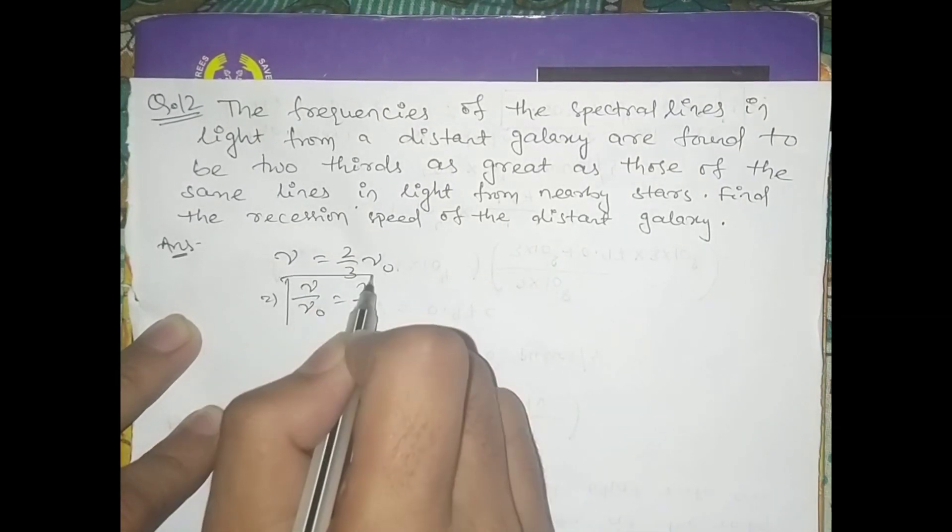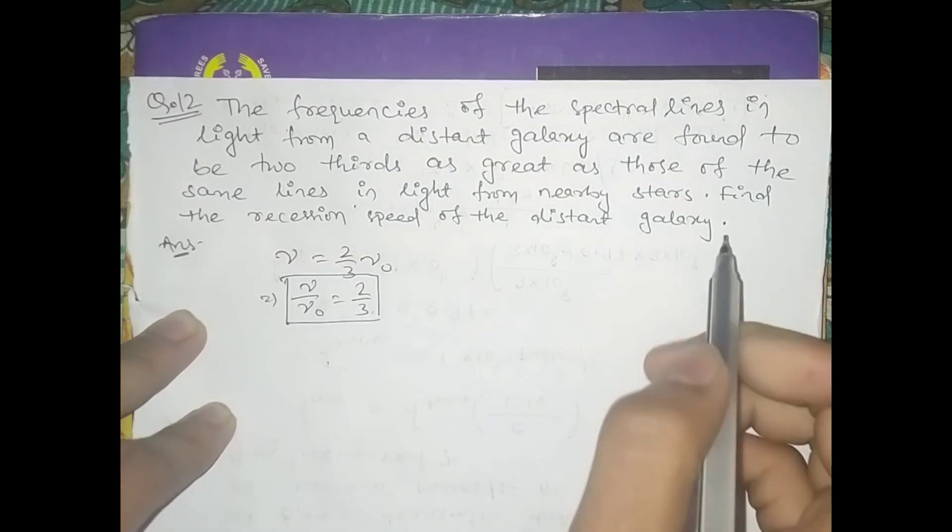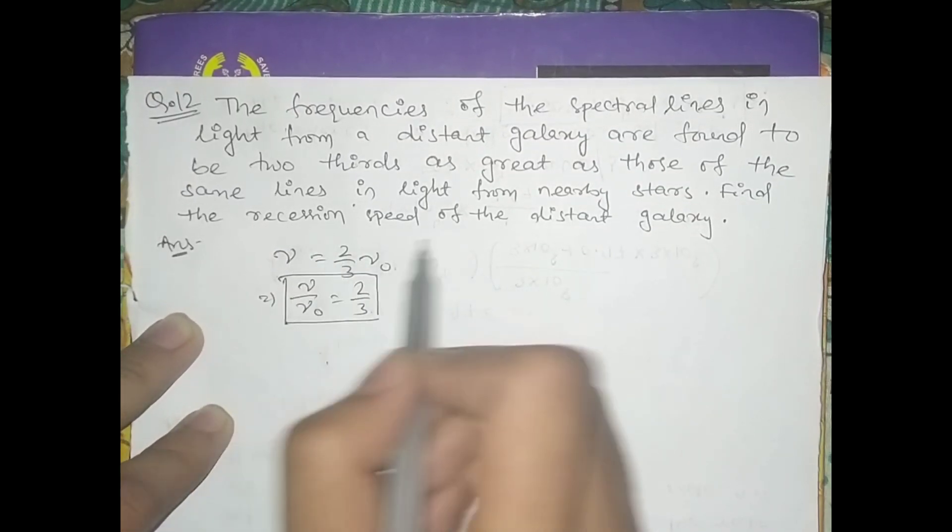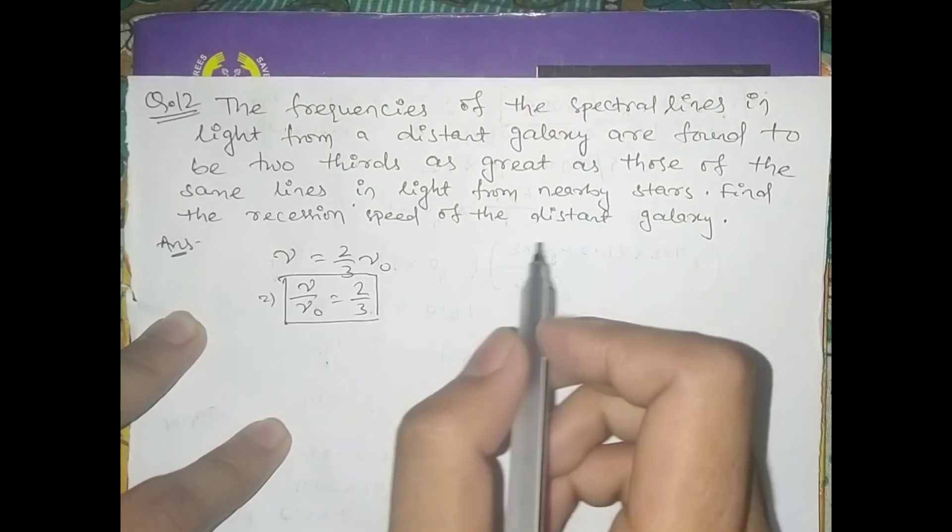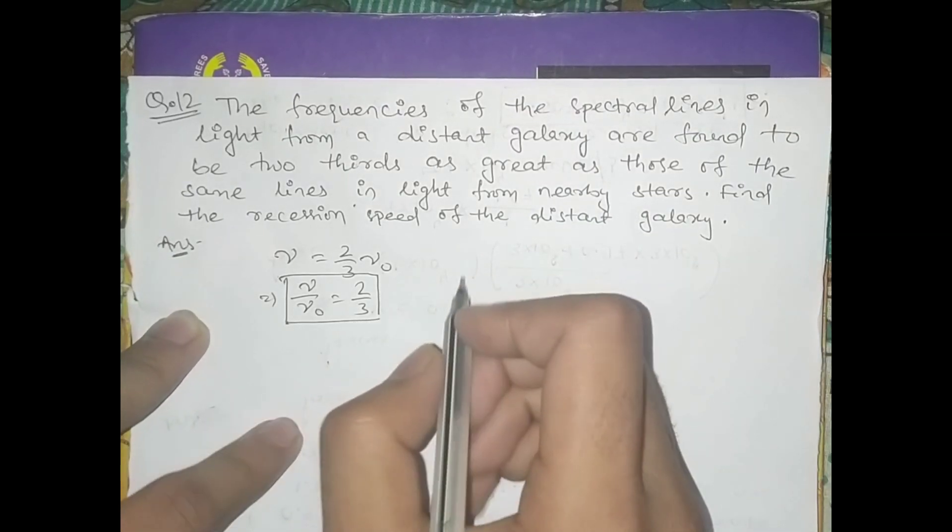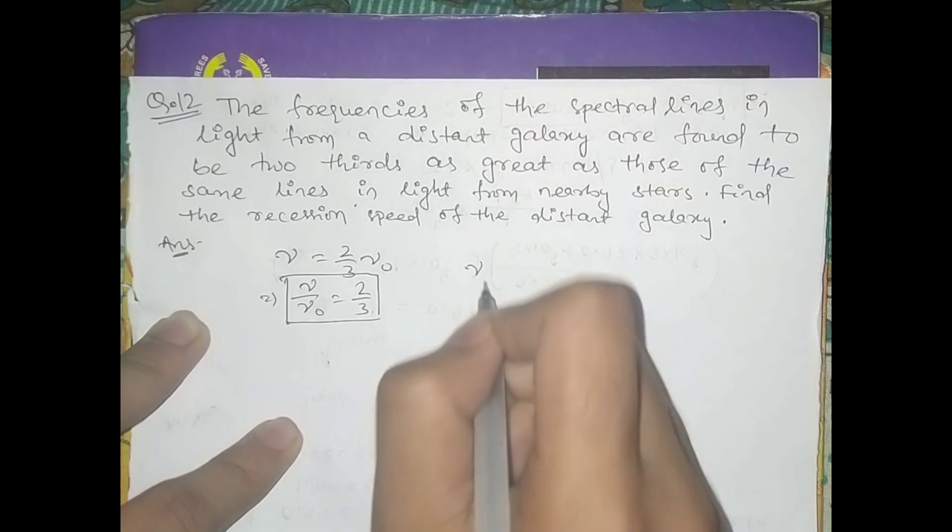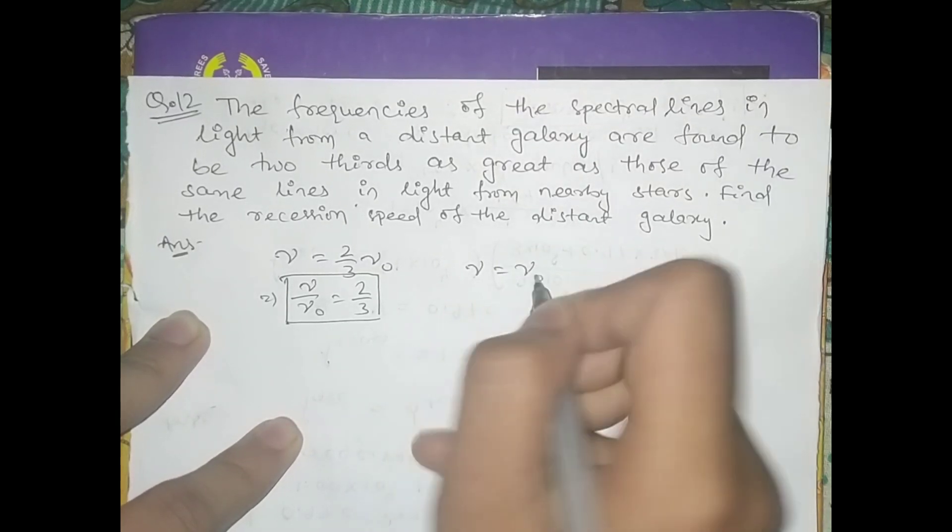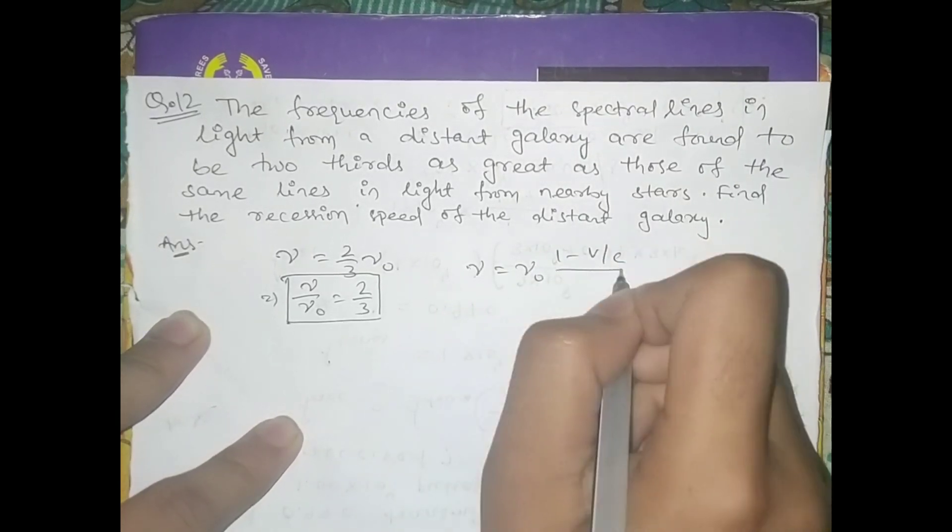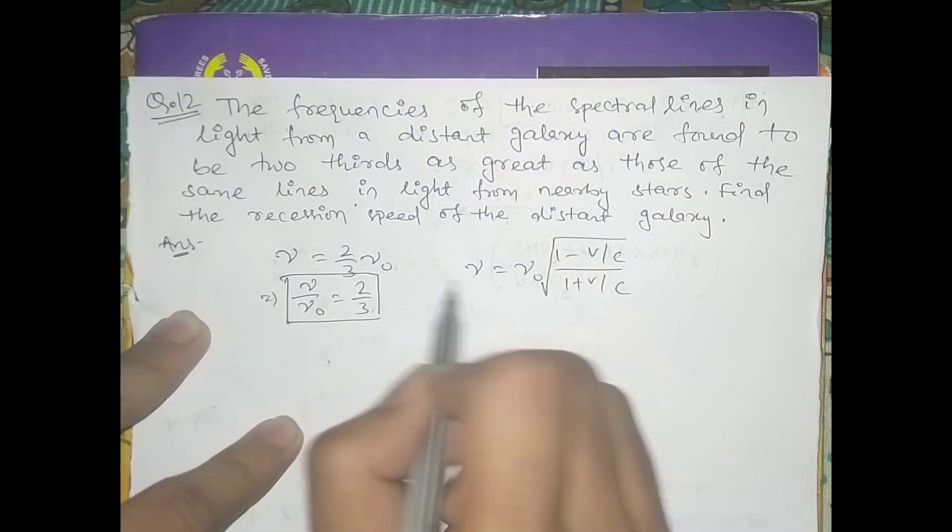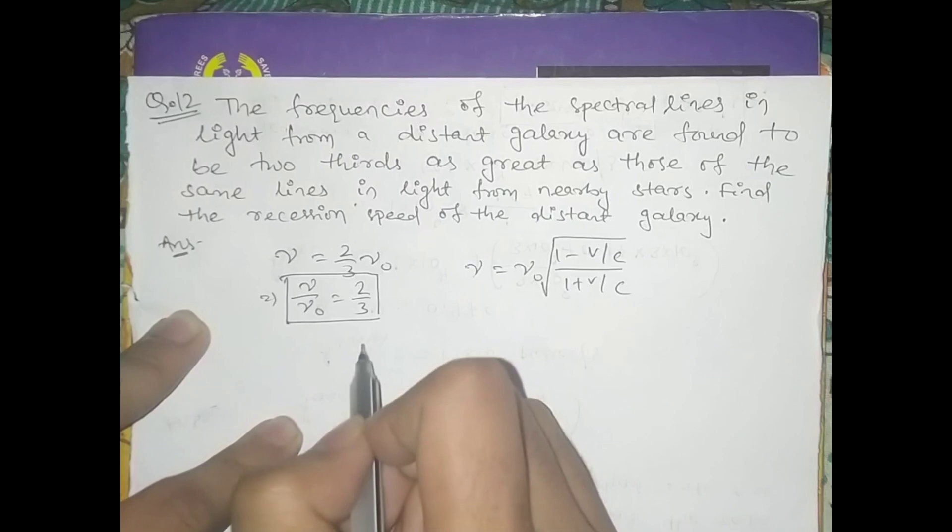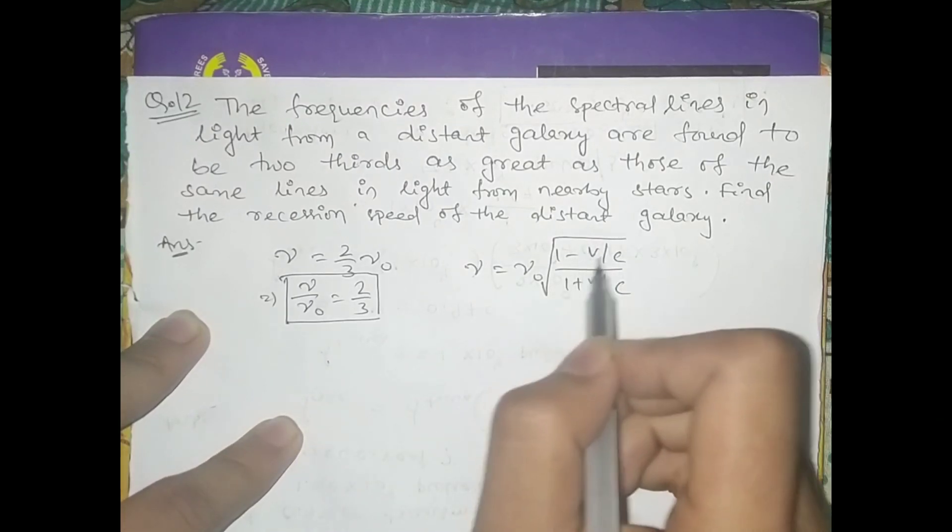It asks us: what is the recession speed? For recession speed, the source is receding from the observer, so nu equals nu_zero times the square root of (1 minus v/c) divided by (1 plus v/c). Here the ratio of nu and nu_zero is given as two by three, and it asks us for the value of v.